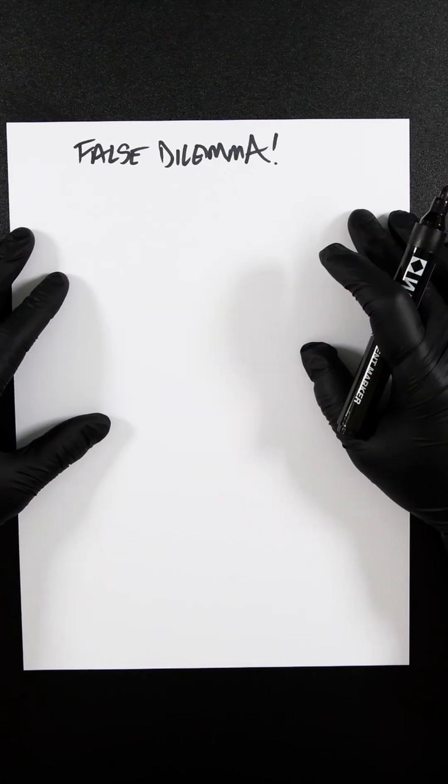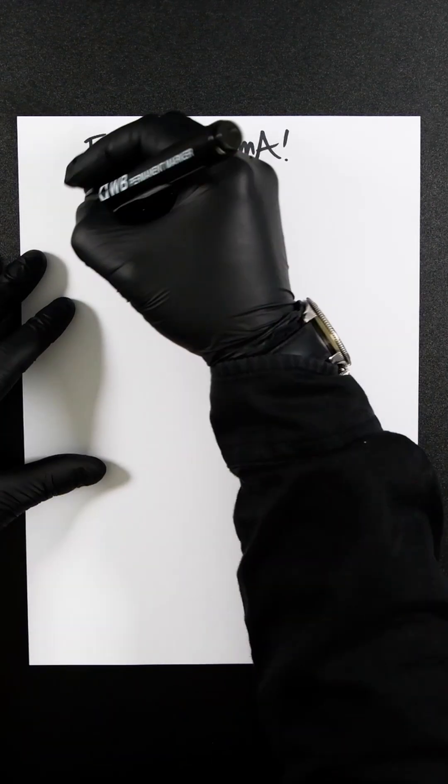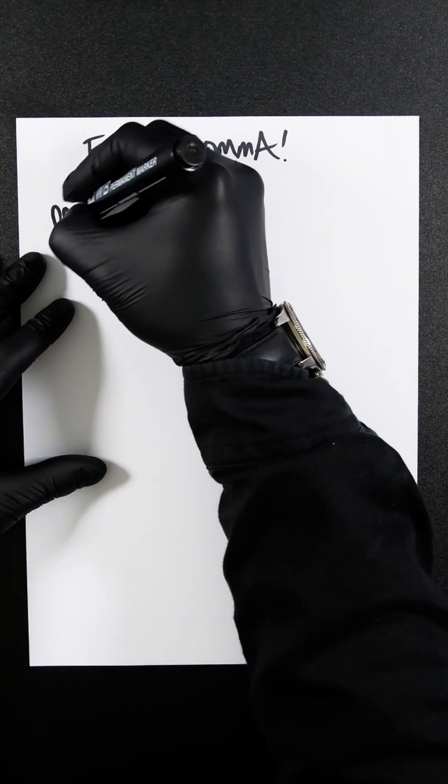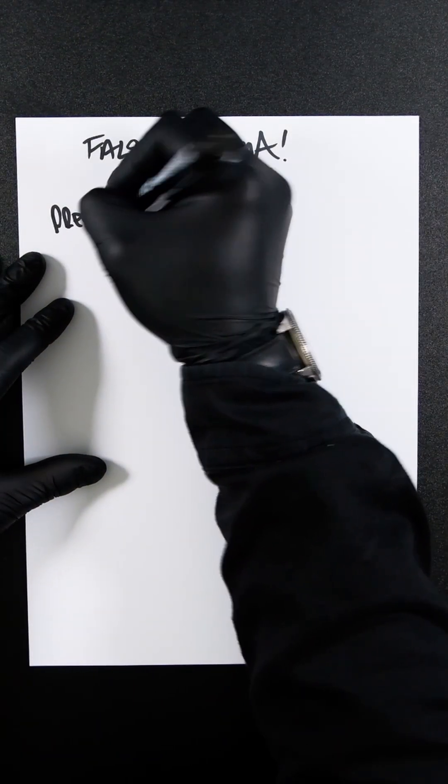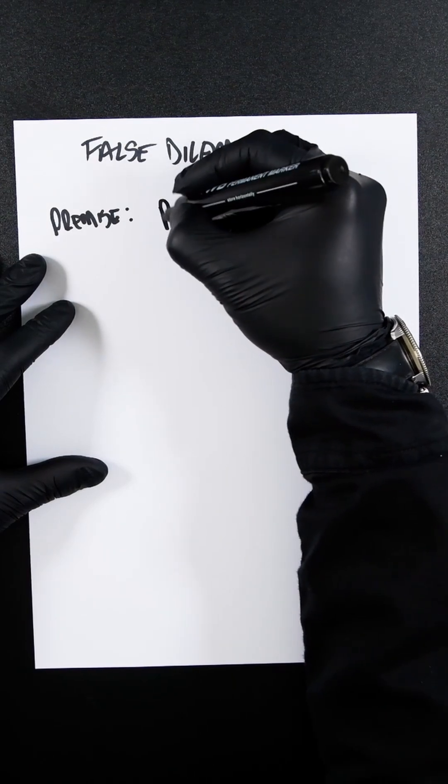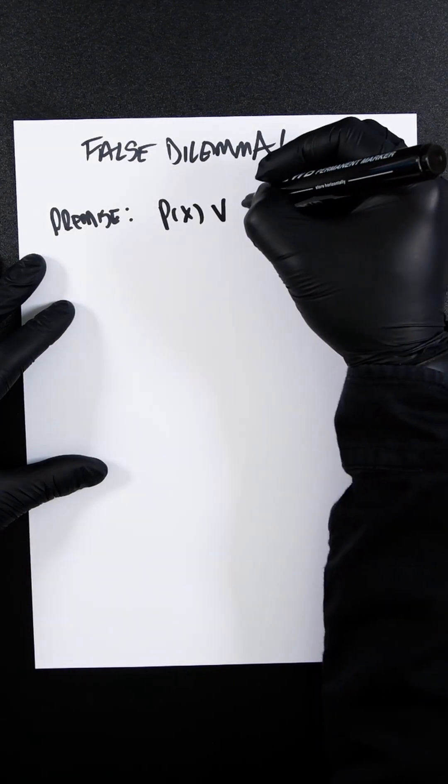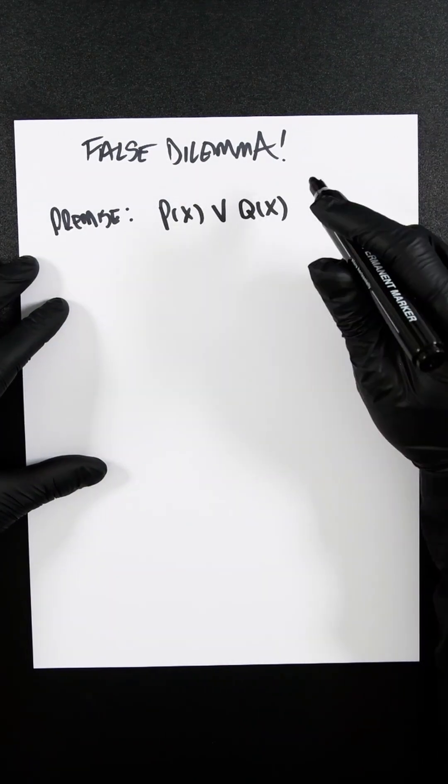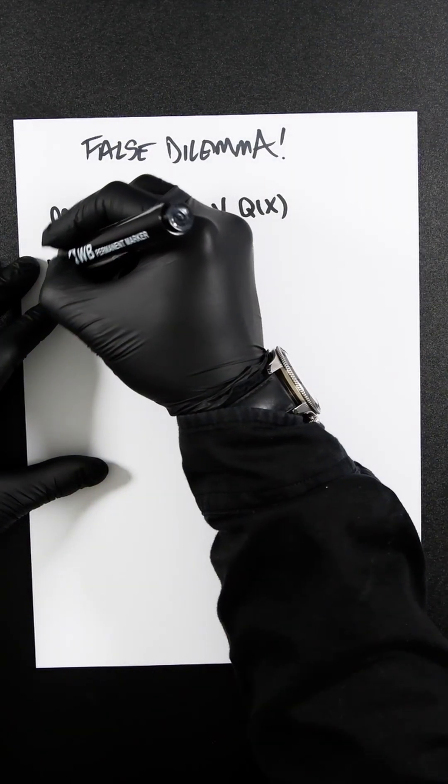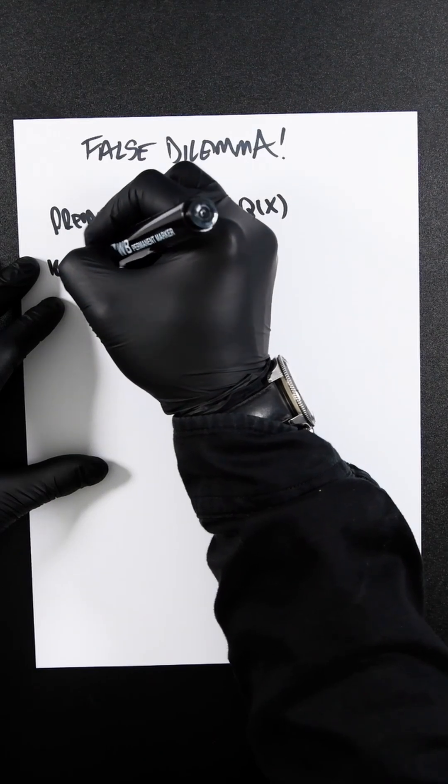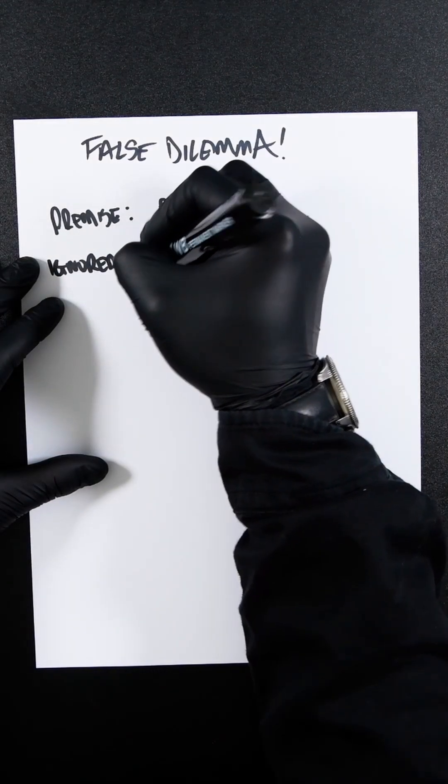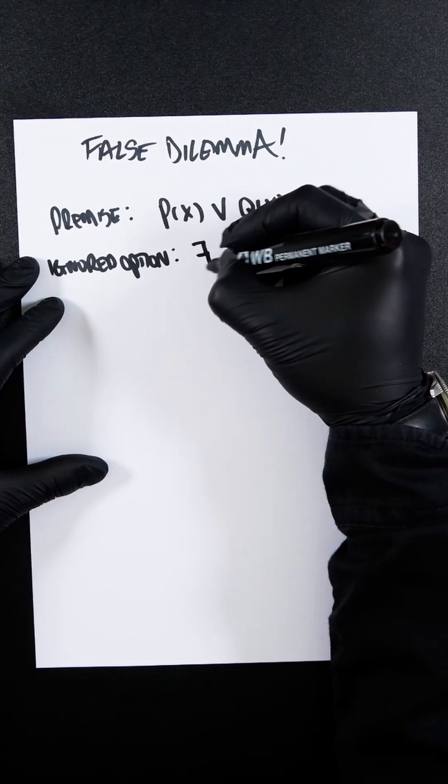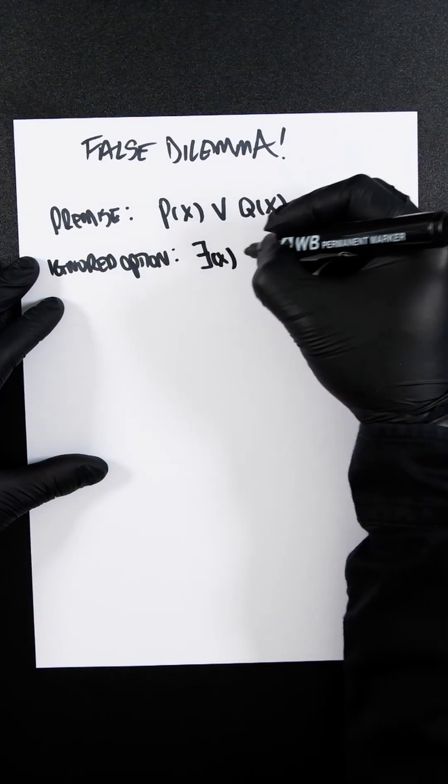Formally it's a fallacy of overly restrictive disjunction. So let's take the premise - the premise is the false dilemma, so P or Q, somebody's saying this or this. So now we need to have the ignored option, so there exists x...